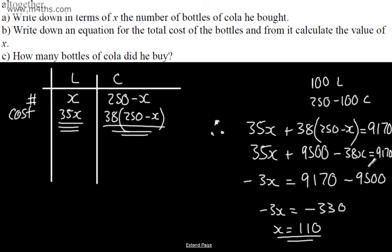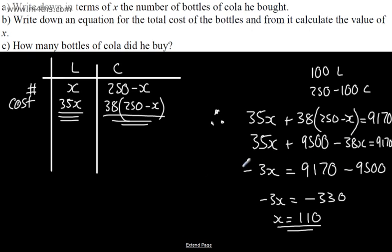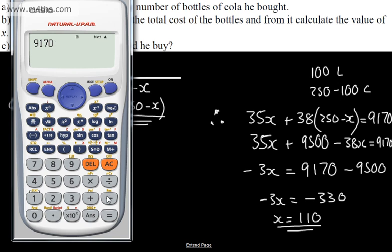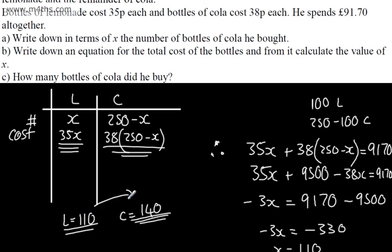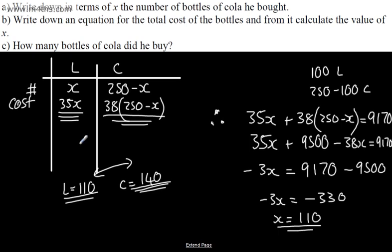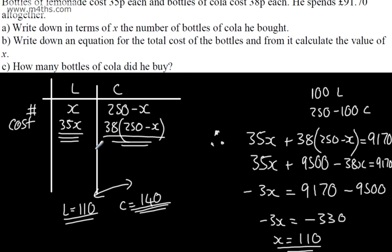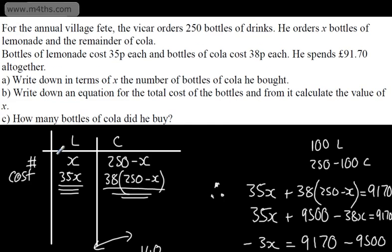You could also have added 38x to both sides and subtracted 35x and 9,170. Either way, 9,170 minus 9,500 divided by negative 3 gives x equals 110. So lemonade equals 110 bottles, and cola is 250 minus 110, which is 140. These add up to 250. So the vicar bought 140 bottles of cola and 110 of lemonade. That's setting up and solving linear equations — sometimes the wording is quite tough, but hopefully that's a good start.